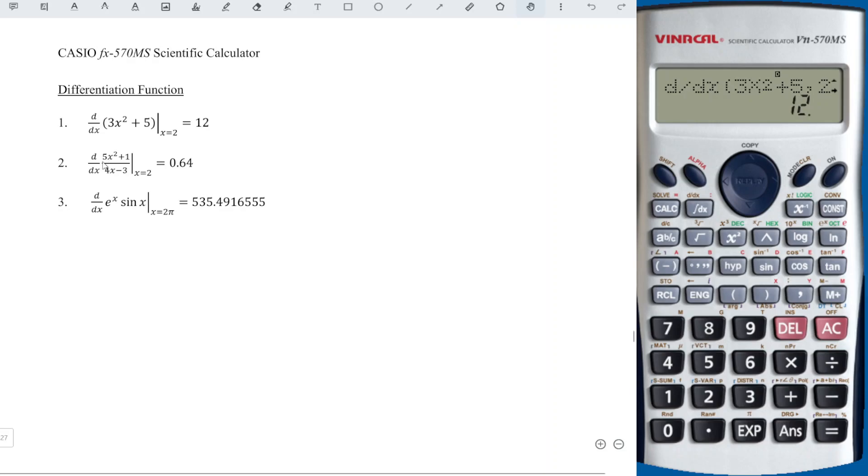Next, we have a fraction. What we have to do here is insert brackets for both the numerator and denominator. So Shift, integrate to get differentiate. We should ignore the bracket given by the calculator and add the brackets ourselves. So we have 5, alphabet x square plus 1, close bracket.